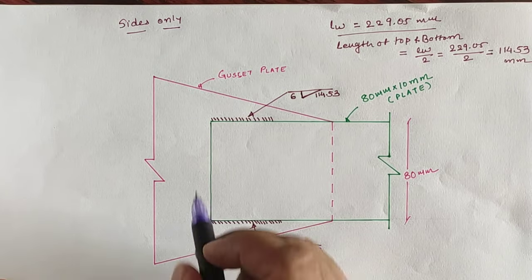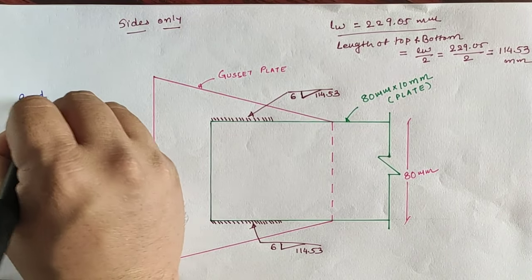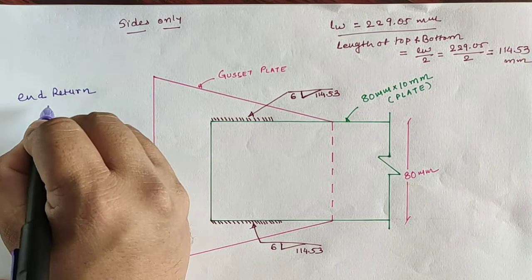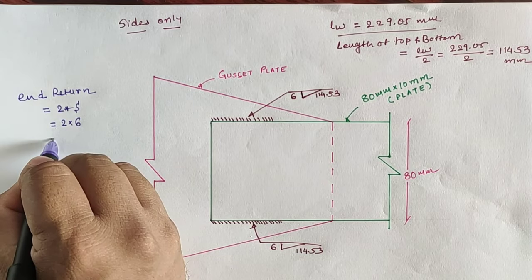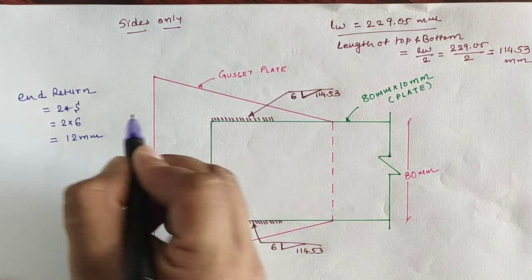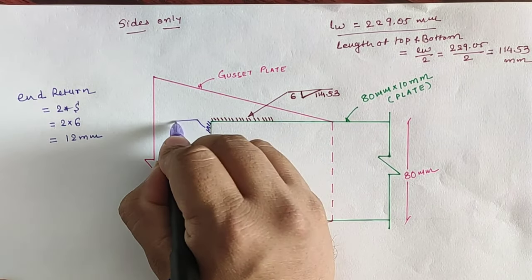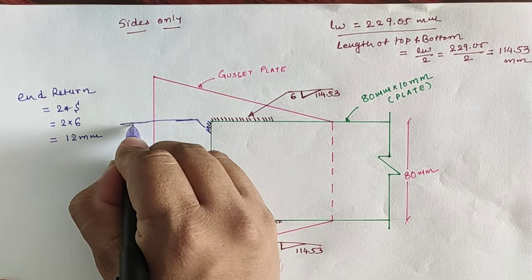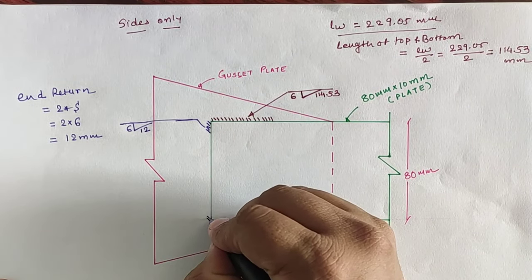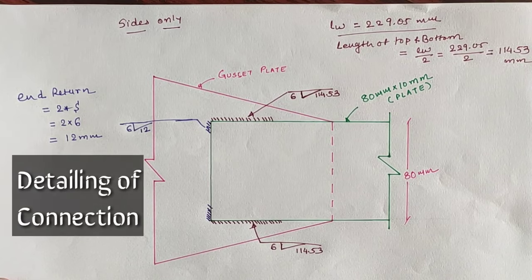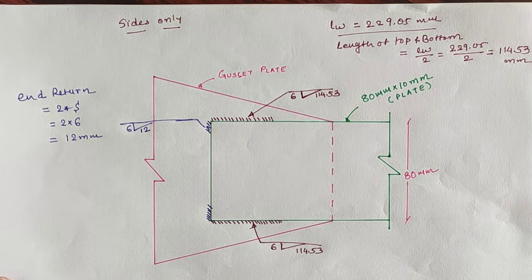According to the codal provision, we have to provide the end return at top and bottom. The end return can be calculated as 2 times the size of weld, which is 2 times 6mm, equal to 12mm at top and bottom. So the end return is 6mm thick and 12mm in length, similarly at the bottom. The figure shows the complete detail of the welded connection for the given data. Thank you.